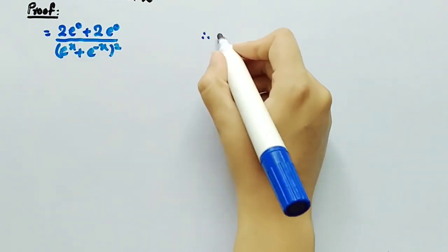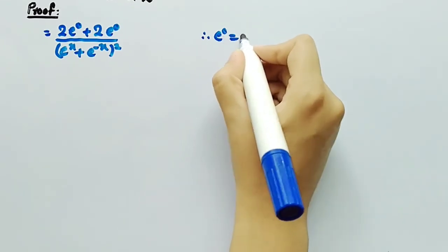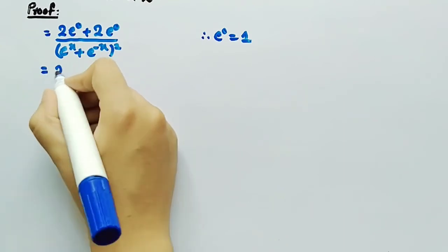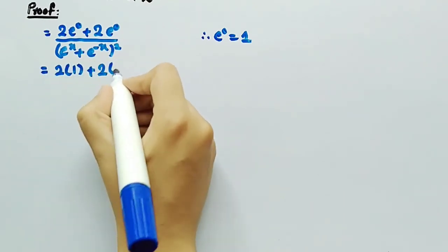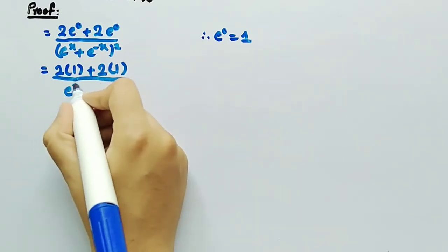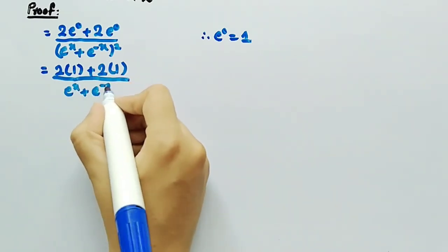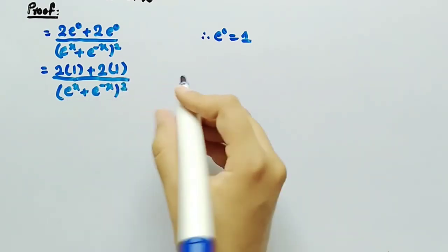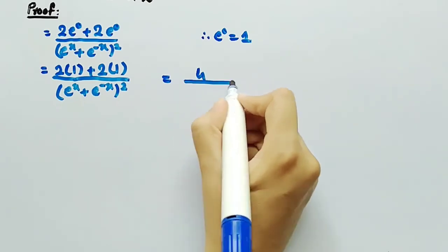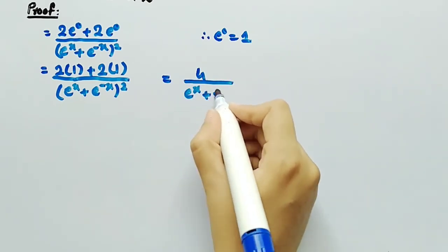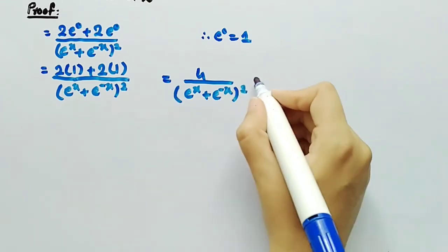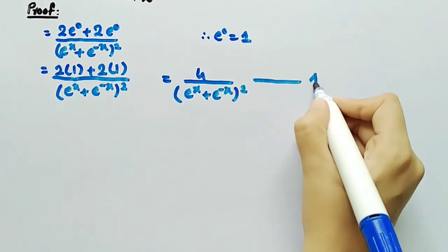We know that e⁰ is equal to 1, so substituting its value we get 2×1 plus 2×1 divided by (eˣ plus e⁻ˣ)², which equals 4 divided by (eˣ plus e⁻ˣ)². Let this be named as equation number 1.